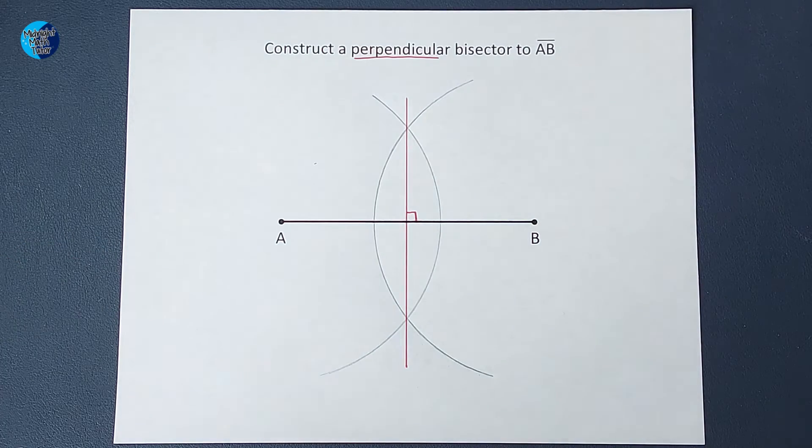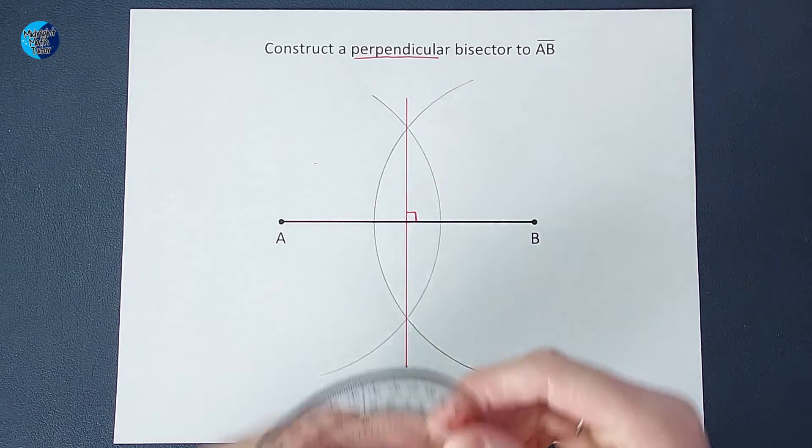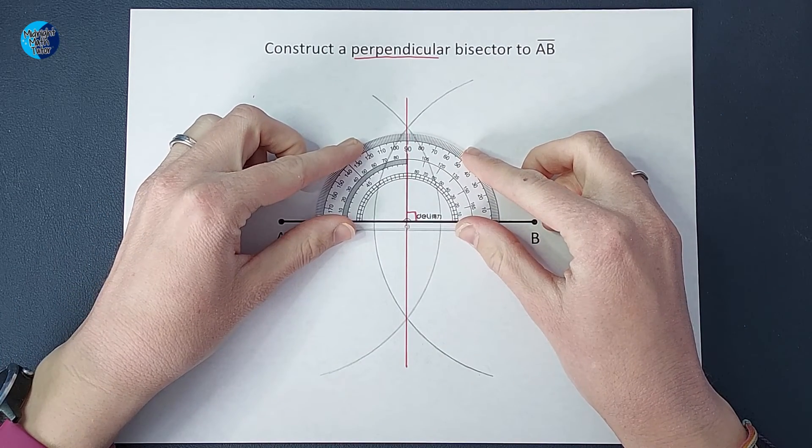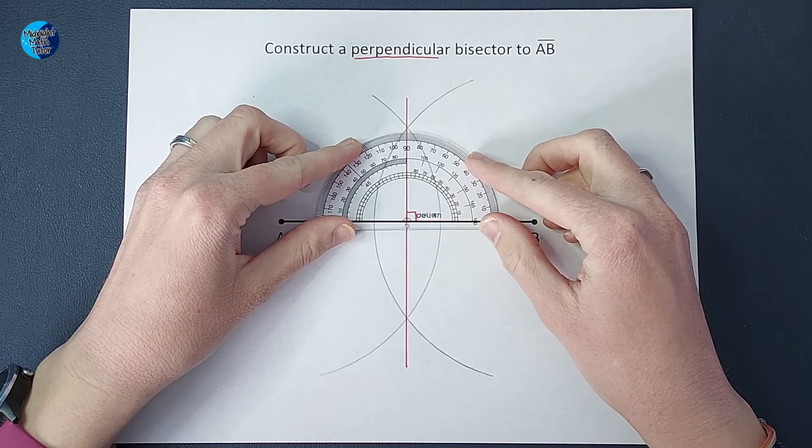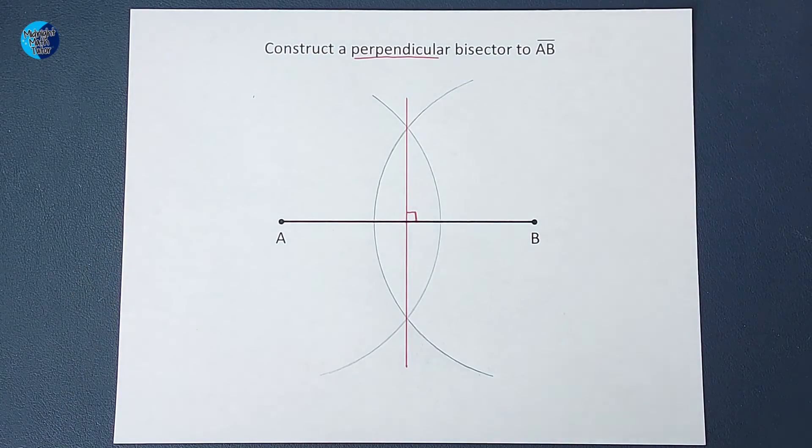But it's pretty darn close. And of course, you could always check. You can pretty much check visually, but you could always check and make sure that that is looking like 90 degrees perpendicular. And that looks pretty good to me.